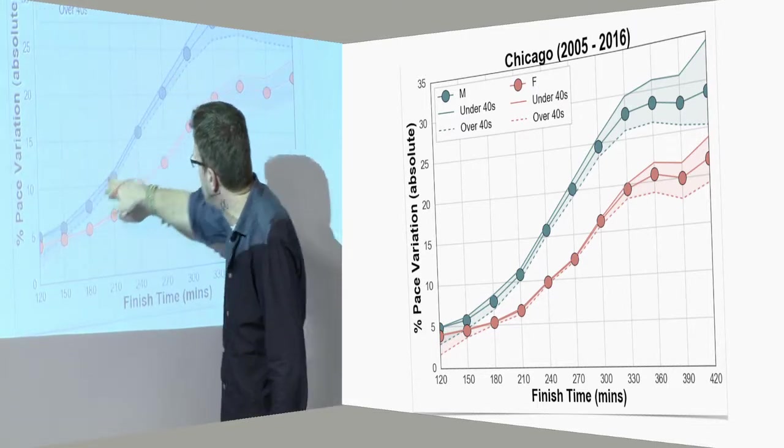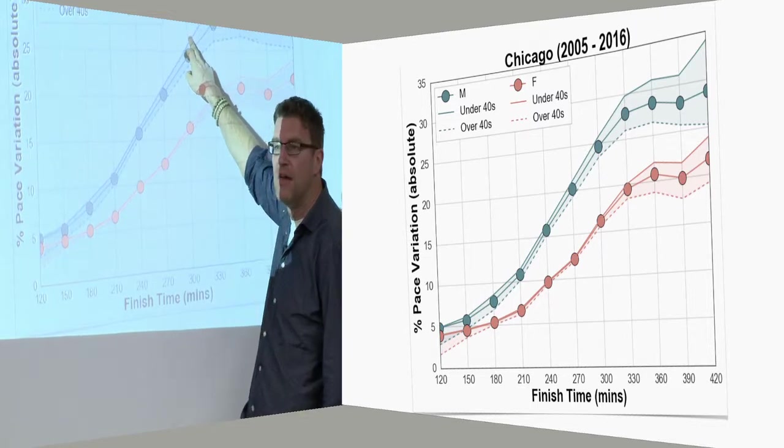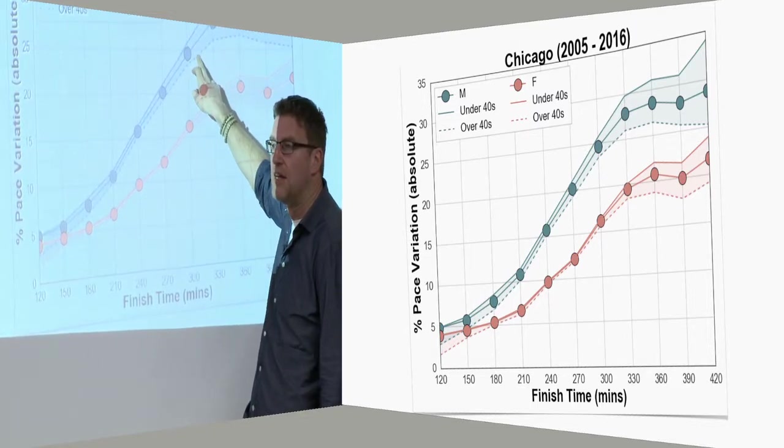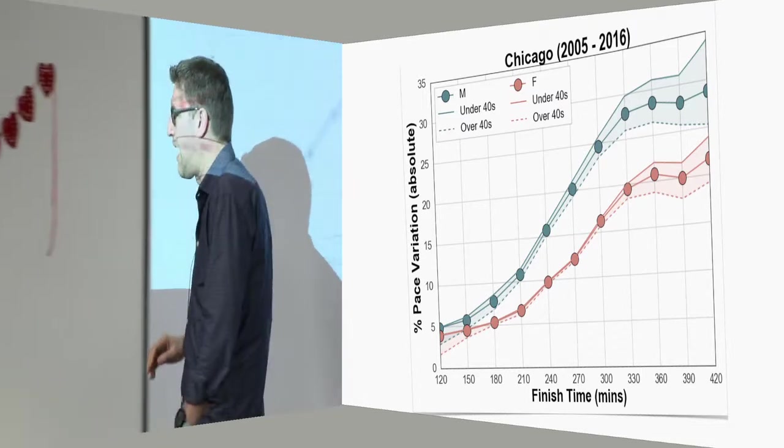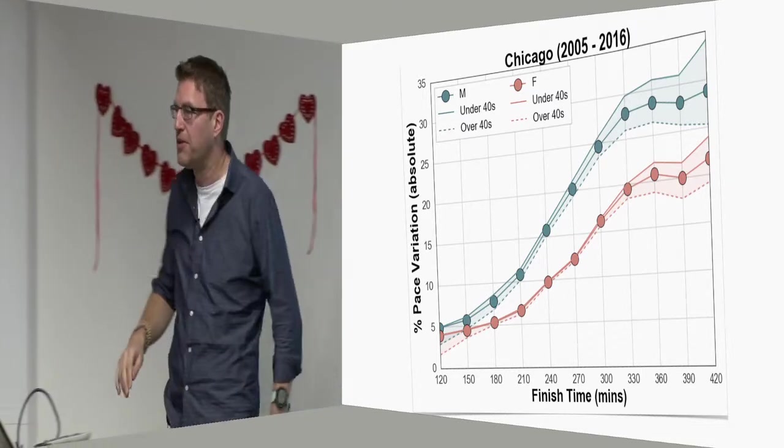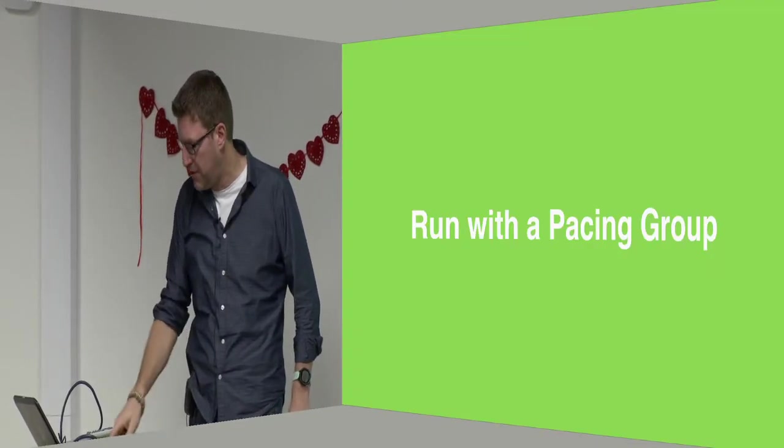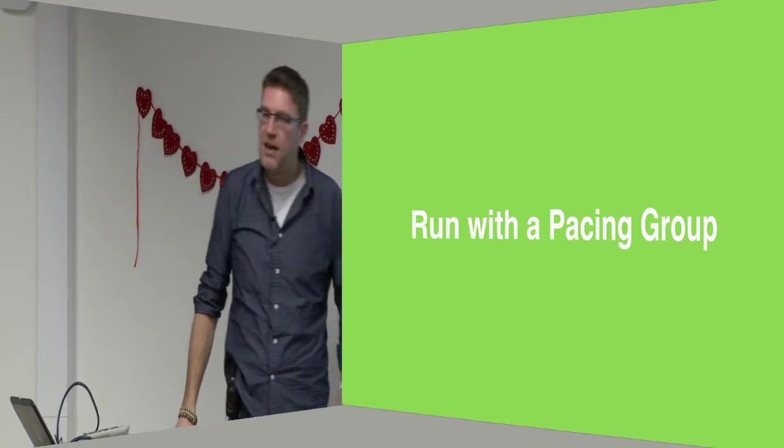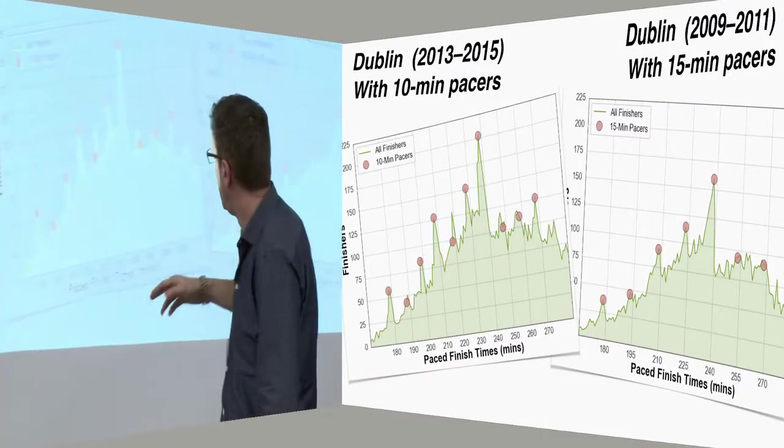You also find that younger runners, for example younger males - the solid line here - tend to have more pace variation than older males. Again, that's the sort of classic caricature of the young impertinent guy who dashes off the line.